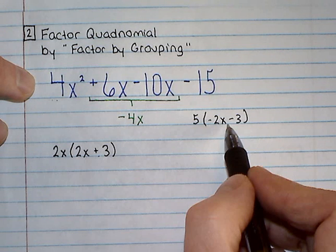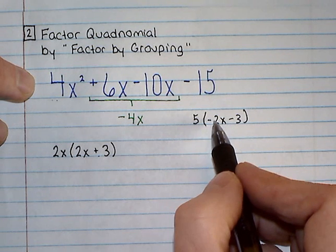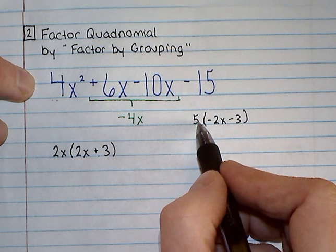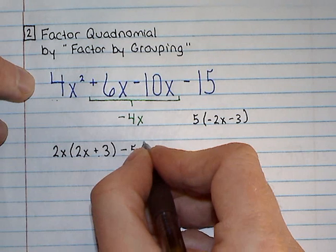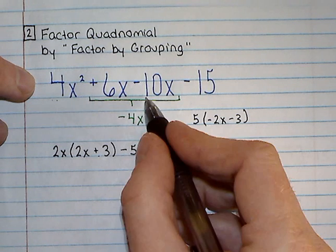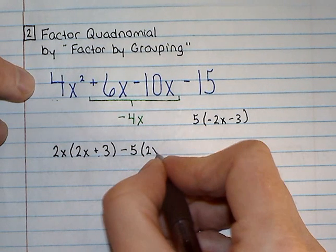In fact, the difference is that it has the opposite signs. So instead of pulling out just a 5, I'm going to pull out a negative 5. And what I will be left with is a 2x plus 3.